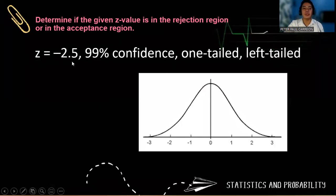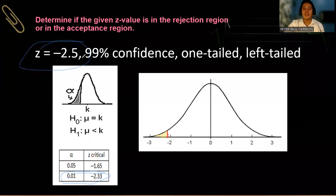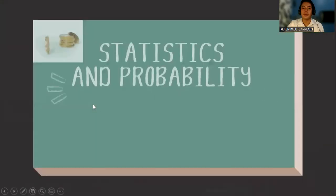Suppose Z is equal to negative 2.5 with a 99% confidence level, one-tailed, left-tailed. We use the critical value of negative 2.33 for 99%, which is 0.01. Negative 2.33 is located here, and we shade the critical region on the left tail. The vertical line is at Z equal to negative 2.5, located inside the rejection region. Therefore, the correct decision is to reject the null hypothesis. Again, this is Sir Peter, your statistics and probability teacher.